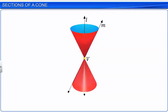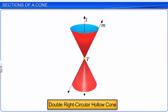Such a cone is called a double right circular hollow cone. In this module, we will refer to this solid figure simply as a cone.